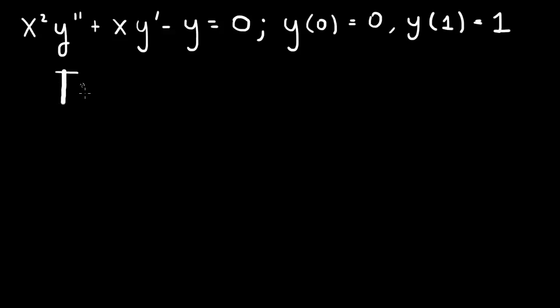we can try to solve this by letting y of x equals a power law, x to the r. And the advantage of a power law here is that when you take the derivative, you drop down one power of x, and then because of x squared and x here, you restore that power. So with this substitution, x to the r will cancel out of the equation, and we can cancel it.